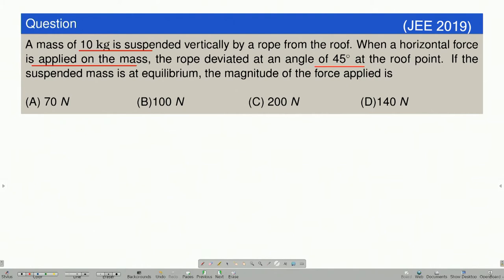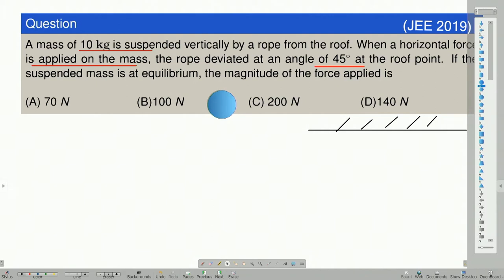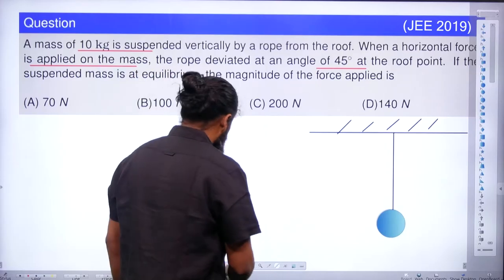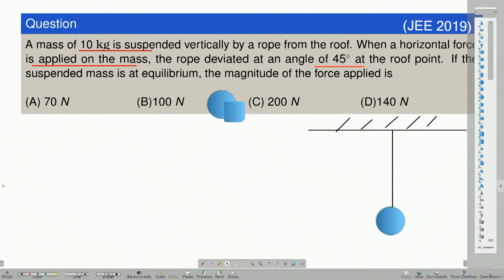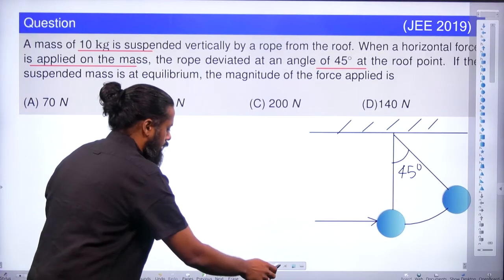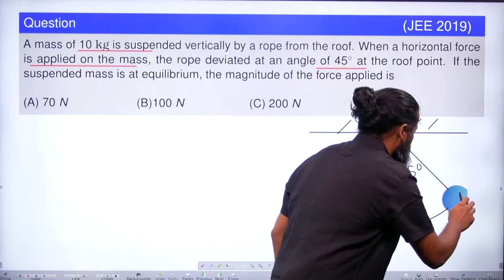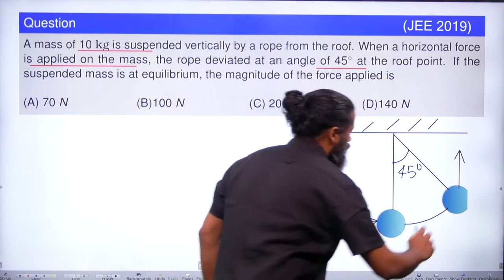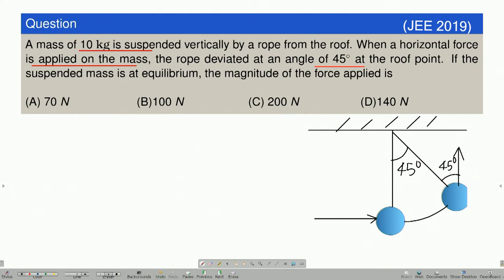You can see that a mass M is hanging from the roof. This is the roof and we have mass M hanging from it, initially making 90 degrees — hanging vertically. Because of the application of some force in this direction, the mass moves to one side, making an angle theta with the vertical. This is given as theta, which is 45 degrees. By applying the principles of trigonometry, you can see that this angle is also going to be 45 degrees.